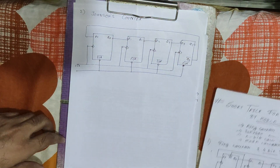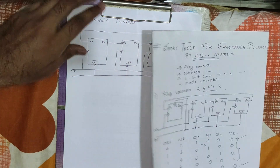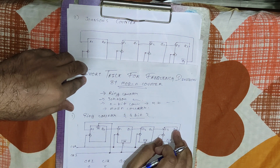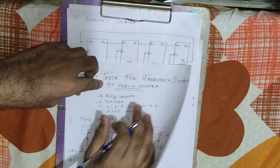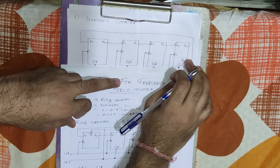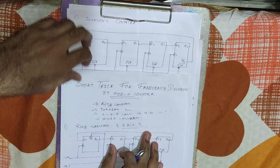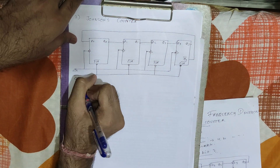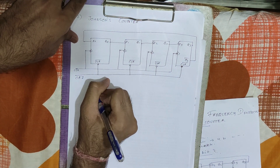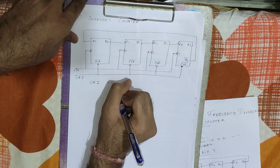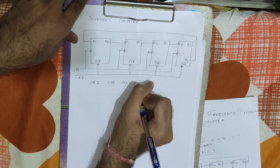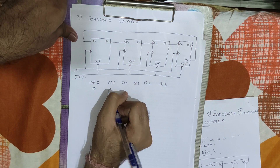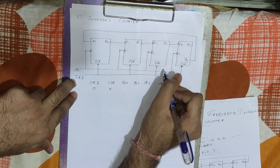Now we will see the second counter: the Johnson counter. The basic difference between the ring counter and the Johnson counter is that in a ring counter the output of the last flip-flop is directly given to the first flip-flop, but in the Johnson counter the complement of the last flip-flop's output is given as input to the first flip-flop. Because of this, the number of states increases. Let us draw the truth table for the override, clock, Q0, Q1, Q2, and Q3.